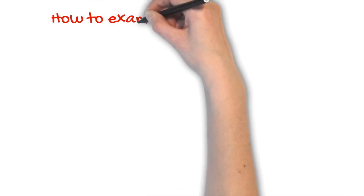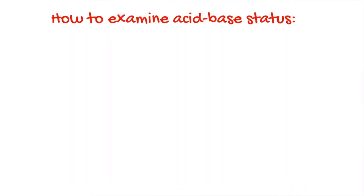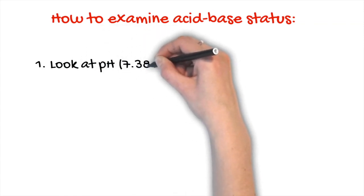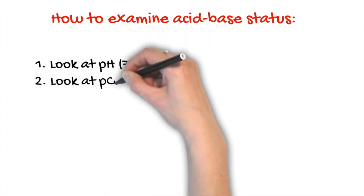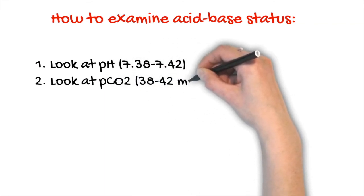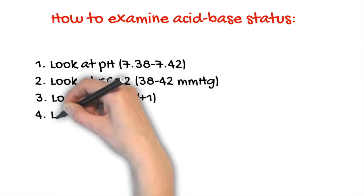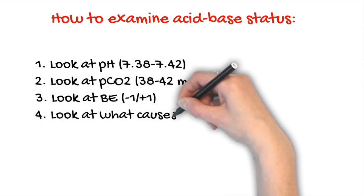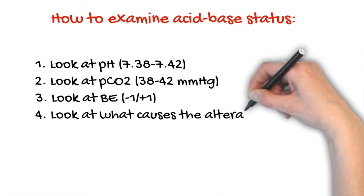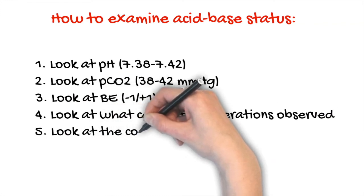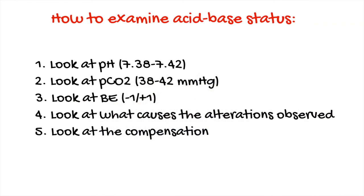Now, take note — if you have to analyze blood gases of a horse, first of all look at the pH to see if there is acidemia or alkalemia. Then look at the pCO2 to see if there is a respiratory alteration and if it is in the same direction as the pH or not. Then look at base excess or bicarbonate for the metabolic component. Then look at electrolytes, proteins, and lactate to find the primary cause of the altered pH, and finally, if you want, try to calculate the expected compensation.